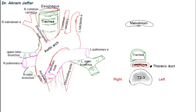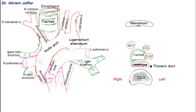The second branch is the left common carotid artery, and the third is the left subclavian artery. These three branches spiral around the trachea and esophagus, as seen here and in the horizontal section. The ligamentum arteriosum connects the beginning of the left pulmonary artery to the undersurface of the aorta. It is a remnant of the fetal ductus arteriosus that short-circuited the functionless fetal lungs.